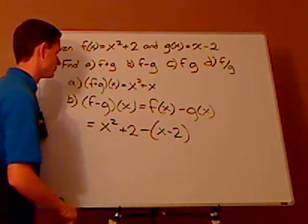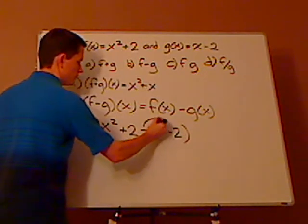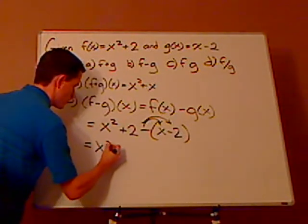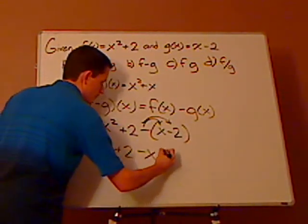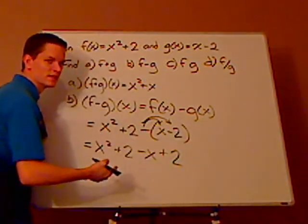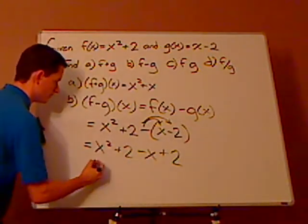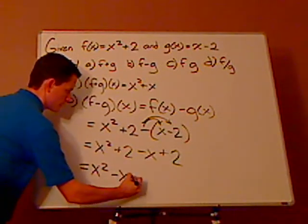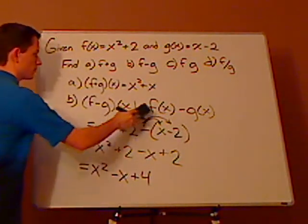If you forget the parentheses it's going to completely change the problem. Then you distribute the negative sign: x squared plus 2 minus x plus 2 — remember it's minus times minus, which gives you a positive. So you simplify to get x squared minus x plus 4.